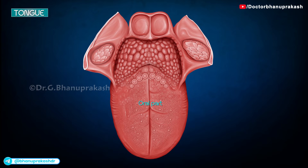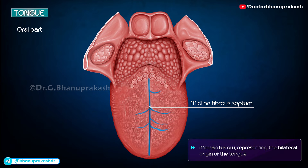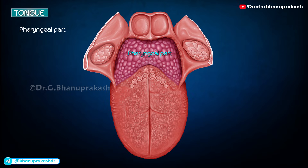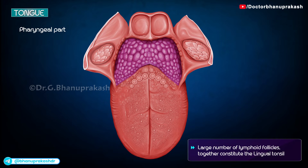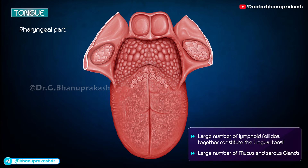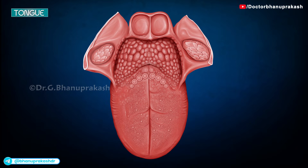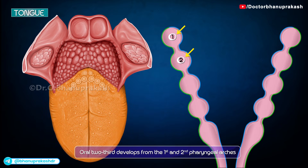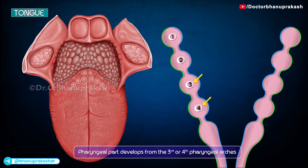The features differ greatly in the oral and pharyngeal parts. The oral part presents with a median furrow representing the bilateral origin of the tongue, and a large number of papillae. The pharyngeal part presents with a large number of lymphoid follicles, which together constitute the lingual tonsil, and a large number of mucus and serous glands. The oral and pharyngeal parts differ in their embryological origin, as the mucosa of the oral two-thirds develops from the first and second pharyngeal arches, while that of the pharyngeal part develops from the third or fourth pharyngeal arches.